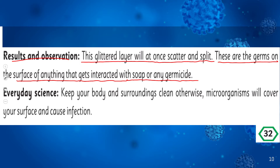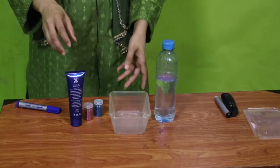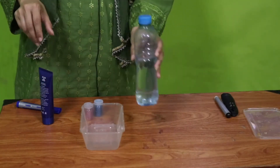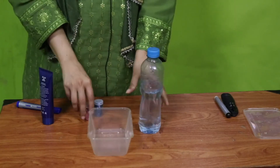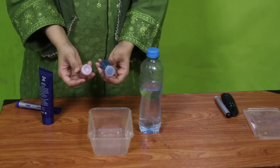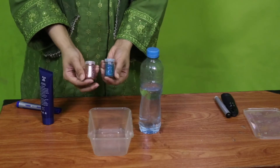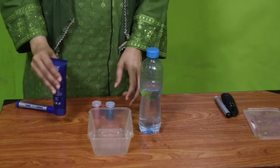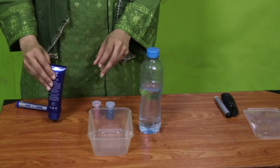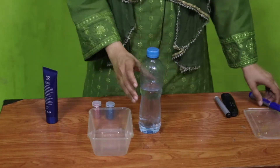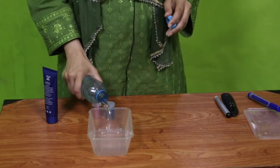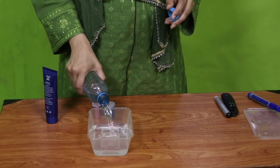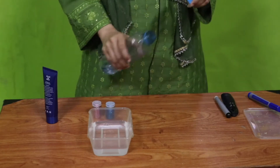When we perform the experiment and touch the bowl with soap, the germs on any surface immediately run away. We need water, an empty container, glitter in any color — the glitter must be in powdered form — and liquid soap or a regular soap bar. We will fill the container halfway with water.